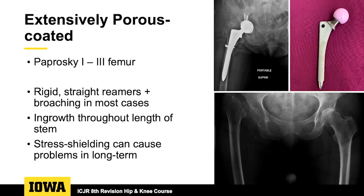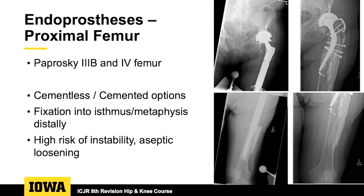Most of these extensively porous-coated systems involve rigid straight reamers and broaching to get a fit. You get ingrowth throughout the length of the stem, which can be a benefit in patients with bad bone. In the long term, stress shielding causes problems and we see that in many patients. Endoprosthesis — addressing the proximal femur and extending to total femur — should really only be used in cases of catastrophic bone loss.